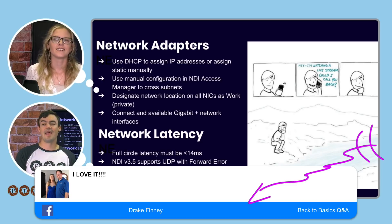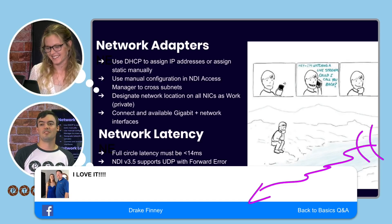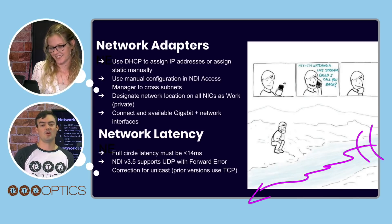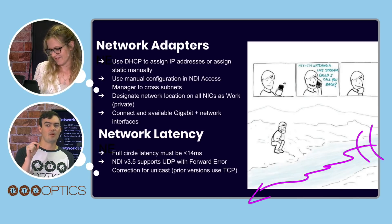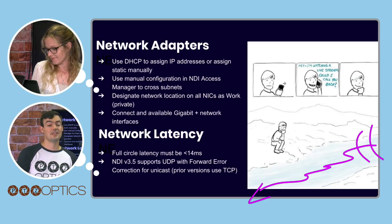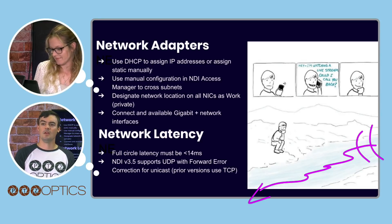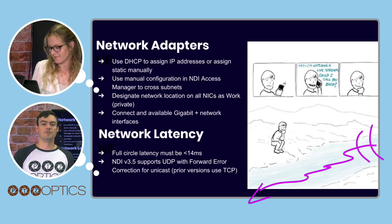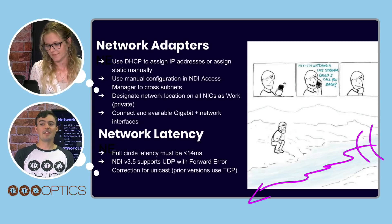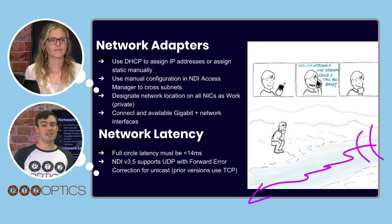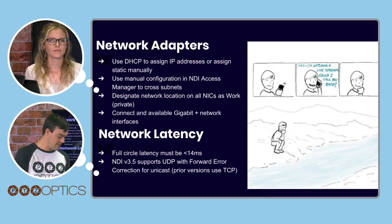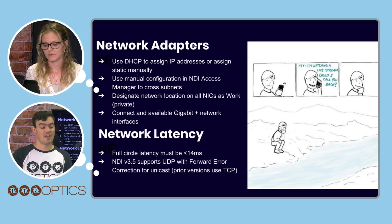Your NIC card — your network interface card — should obviously support a gigabit of data. For network latency, full-circle latency to and from each device should be less than 14 milliseconds. NDI 3.5 supports UDP for forward error correction for unicast, whereas prior versions used TCP — that's actually a huge upgrade that will help with a lot of NDI networks.